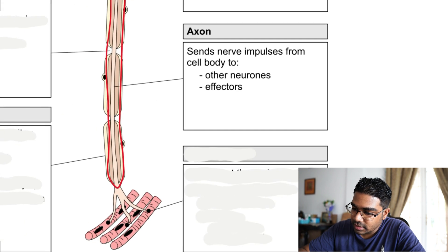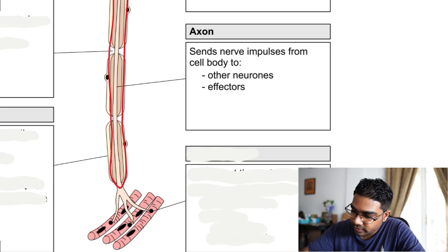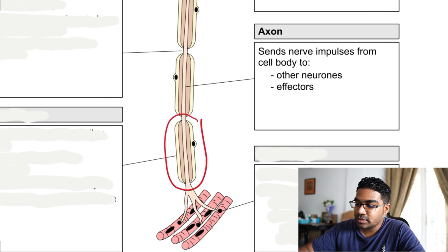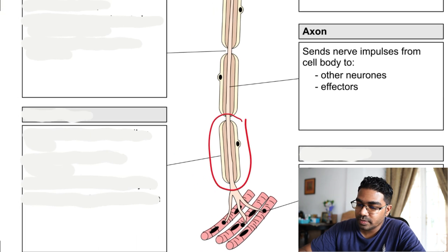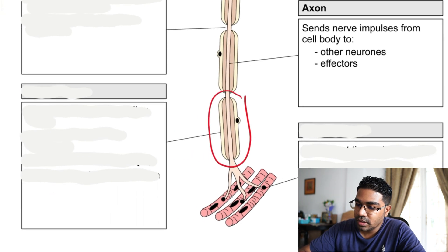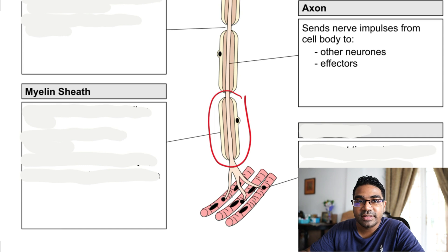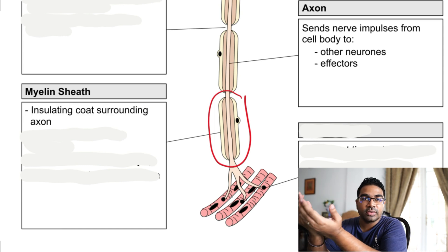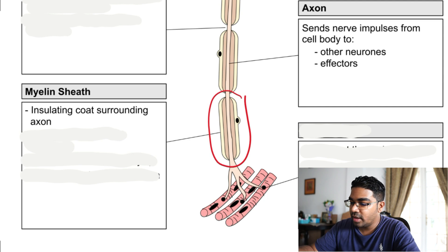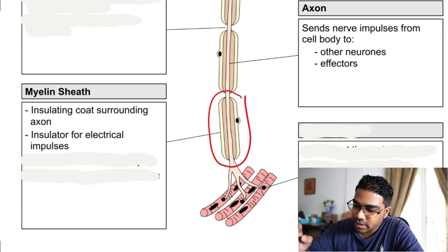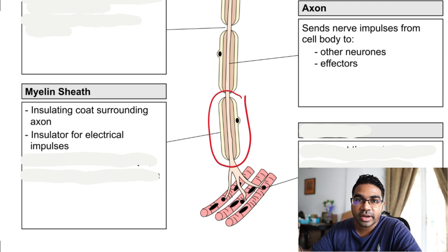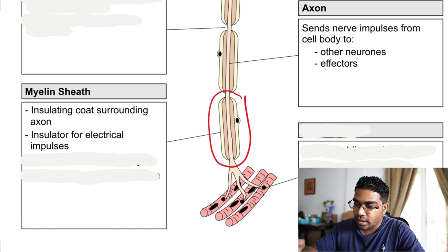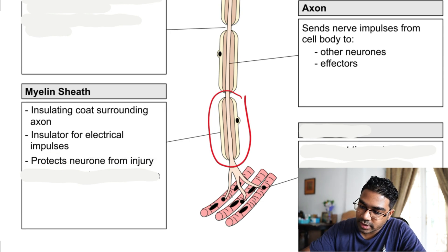Surrounding the axon, you can see a peculiar capsule-like structure. This is called the myelin sheath — an insulating coat that surrounds the axon. The role of the myelin sheath is to act as an insulator for electrical impulses.